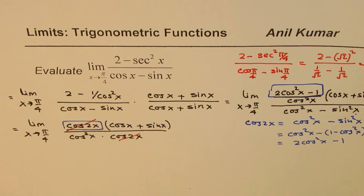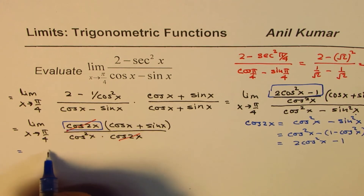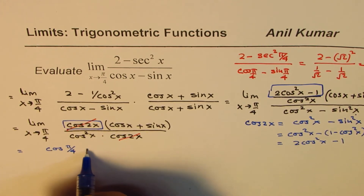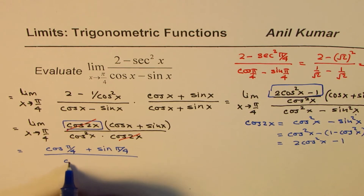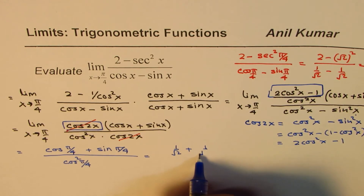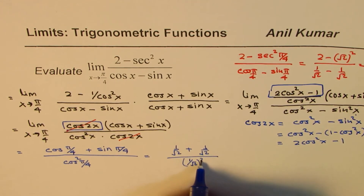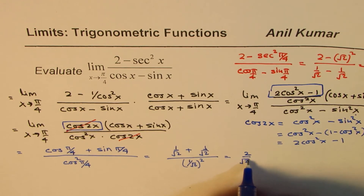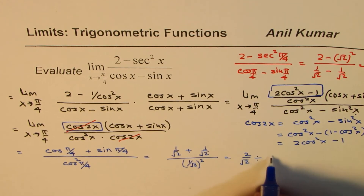Once we cancel the cos 2x terms, the expression simplifies. Now we can substitute x equals pi by 4. We get cos pi by 4 plus sin pi by 4, divided by cos squared pi by 4. That is 1 over square root 2 plus 1 over square root 2, divided by the square of 1 over square root 2, which equals one half.